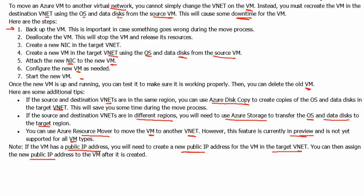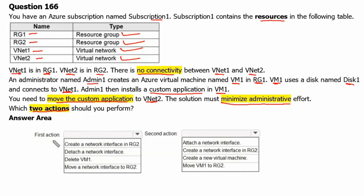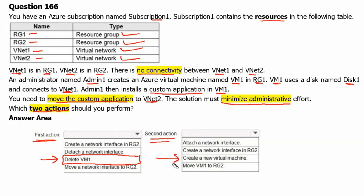Therefore, our first action would be to delete the virtual machine from Resource Group 1 and retain the hard disk for virtual machine 1. And the second action would be to create a new virtual machine in Resource Group 2 and attach the retained hard disk of virtual machine 1 to the new virtual machine.